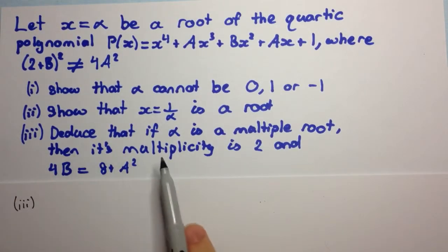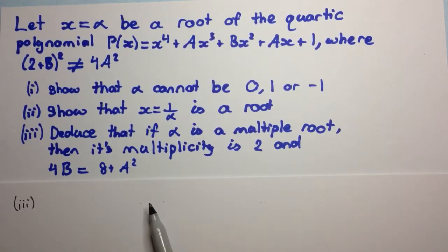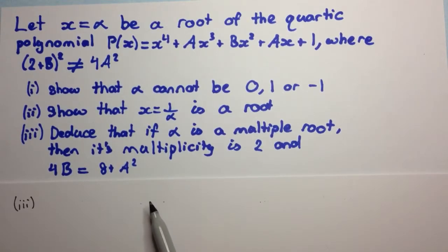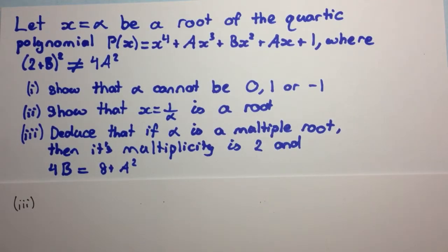The question says: deduce that if alpha is a multiple root, then its multiplicity is 2 and 4b equals 8 plus a squared. So the first thing we need to do is prove that alpha is a multiple root of multiplicity 2.